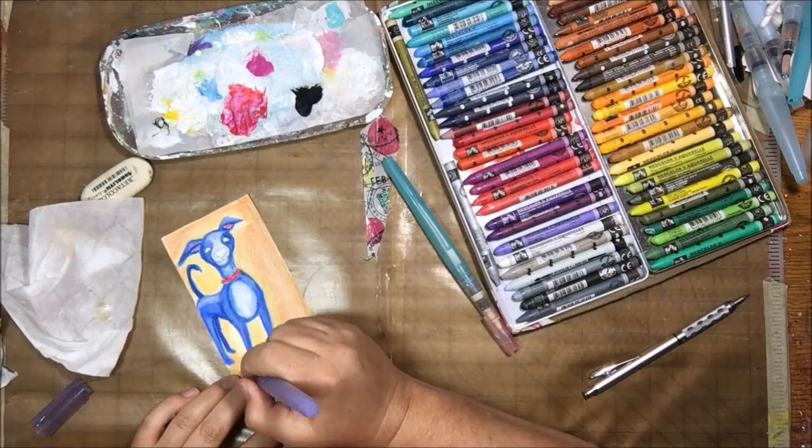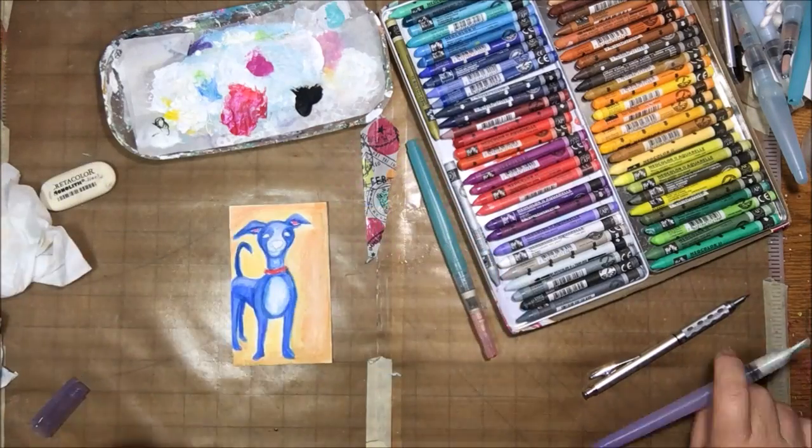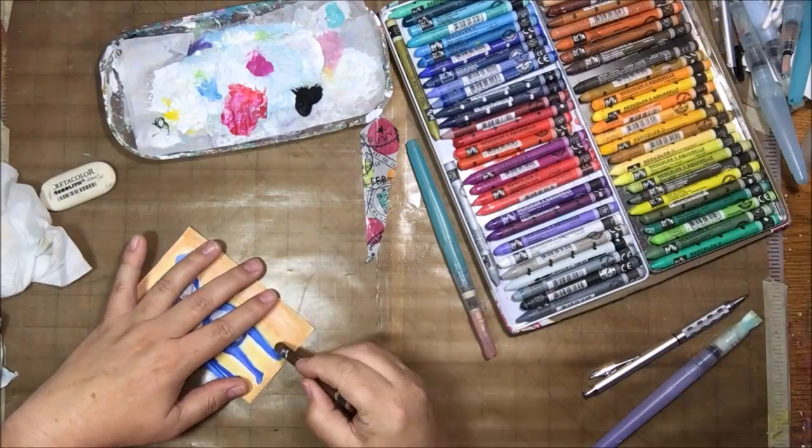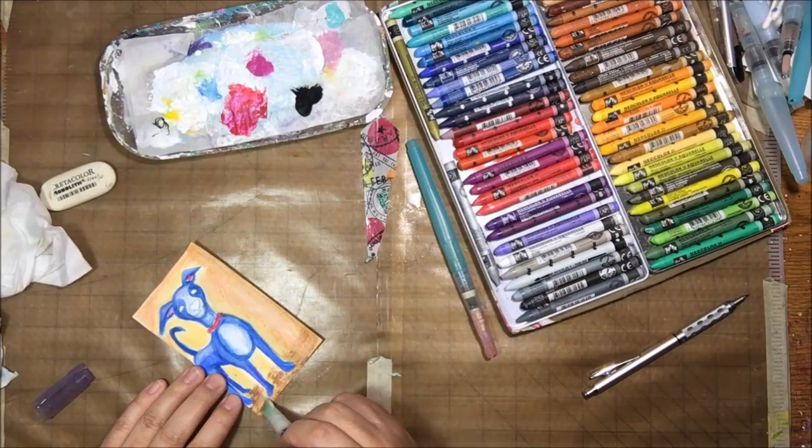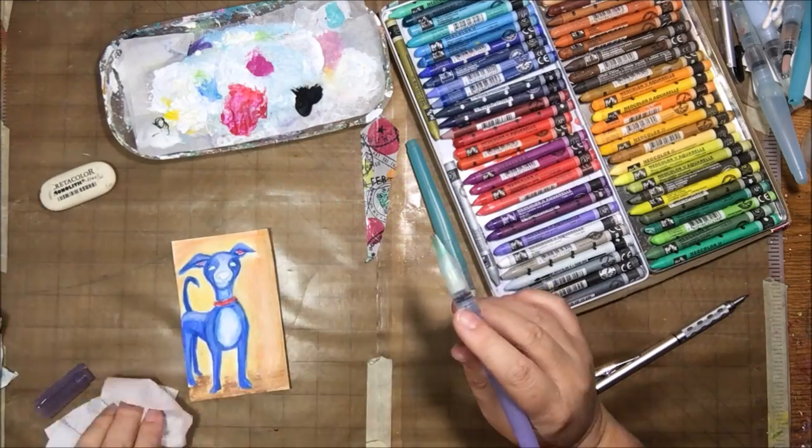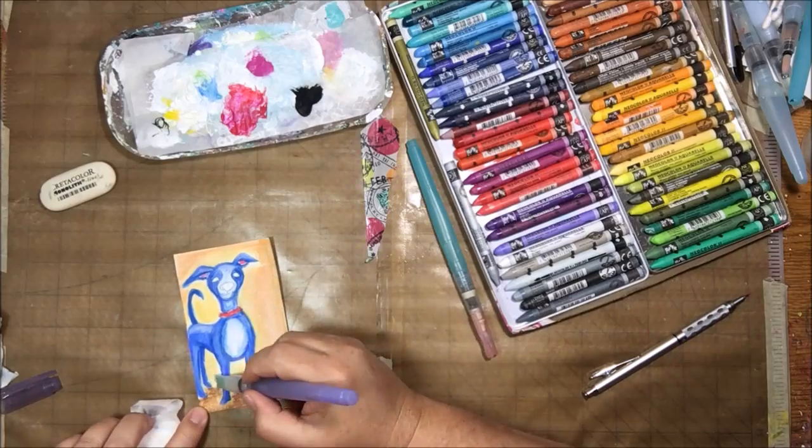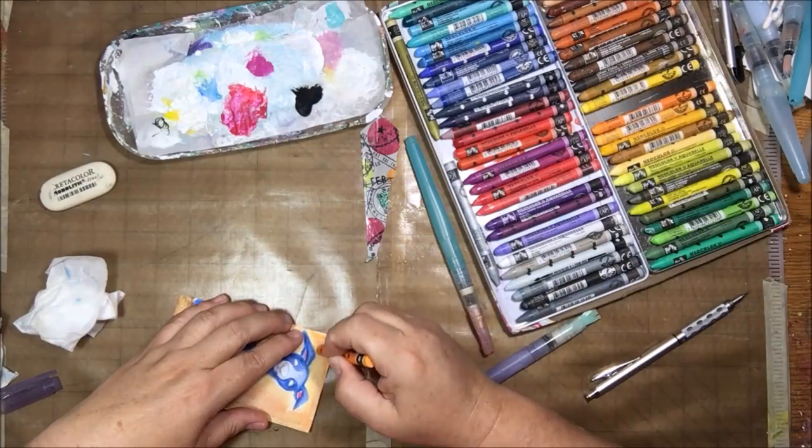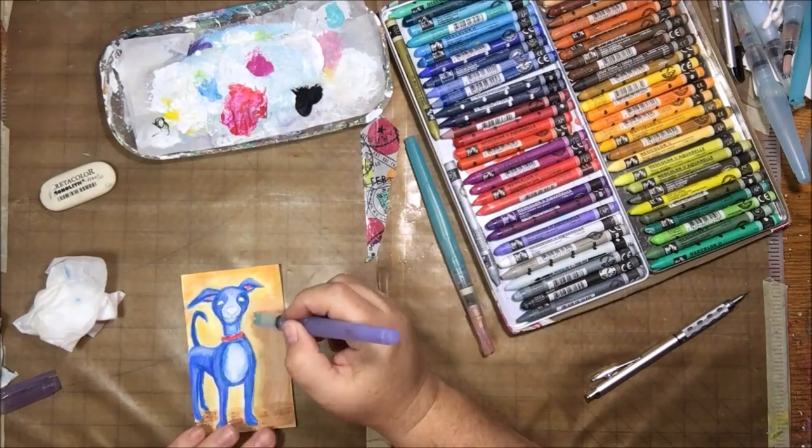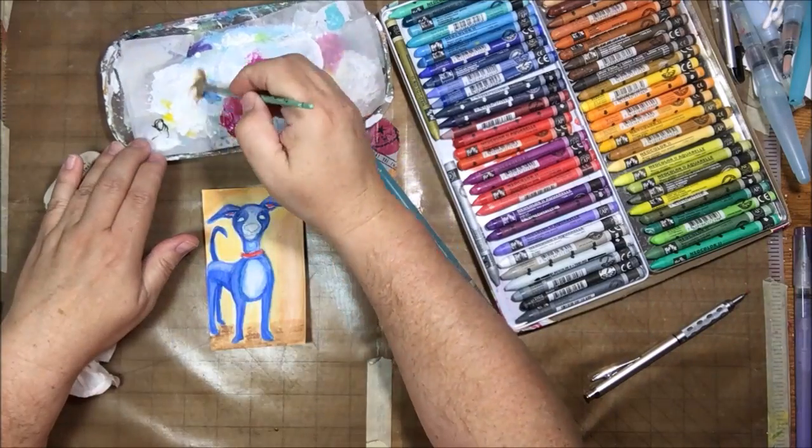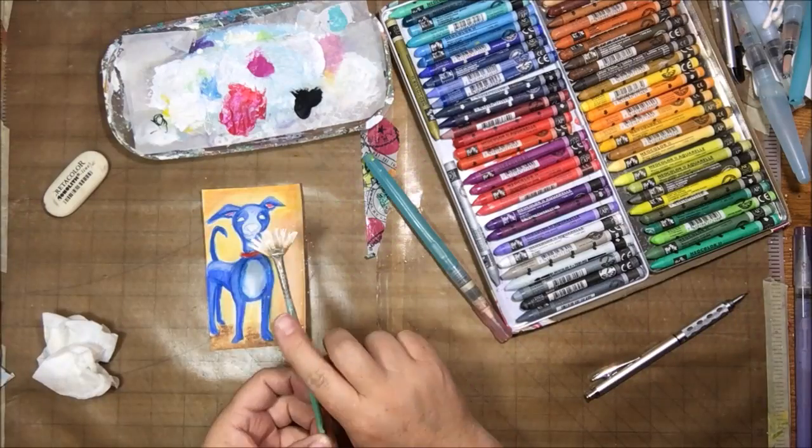I ended up ordering it from Amazon where I get pretty much everything because I don't like to go out and shop. I'm an Amazon girl. Then I add back in some dark brown to the very bottom so that the dog has something to stand on. I cannot stand it when things are not grounded. Drives me nuts. I don't like them to be floating in space. It really bothers me.